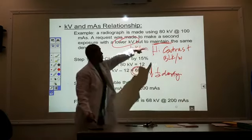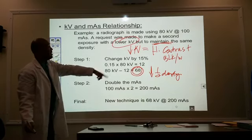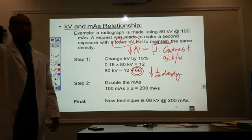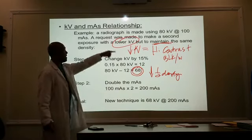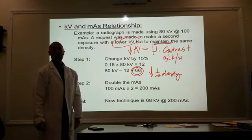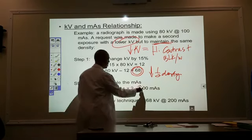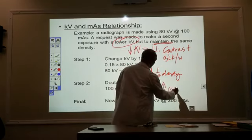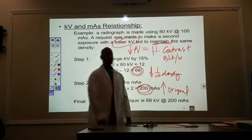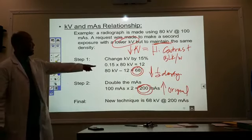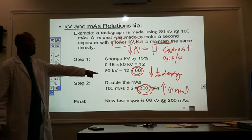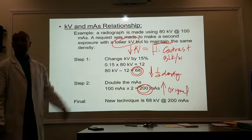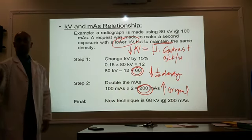I want to get it back to the original density. So to get it back, what I do with one I have to do the opposite with the other. What am I going to do with my mAs? Double it. So 2 times 100 gives me 200 mAs. This gets me back to the original density. So now my new technical factor is 68 kV at 200 mAs.